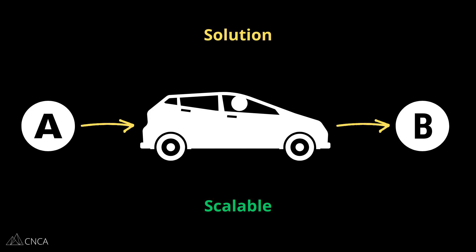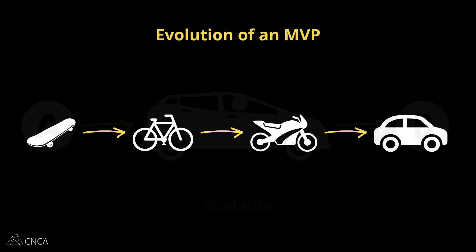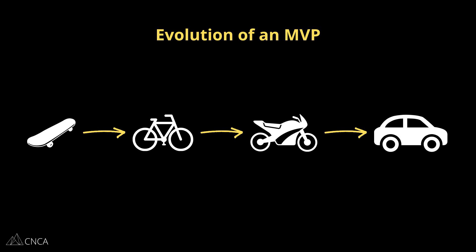Now we're looking at comfort, personalization, and massive scale possibilities. This evolution takes the core solution and, through iterations, improves it one piece at a time. One iteration may be focused on speed, another on mechanics, another on distance, and another on comfort.